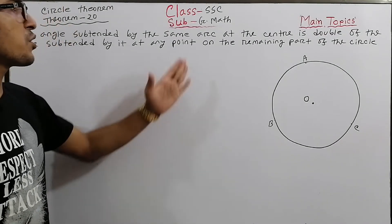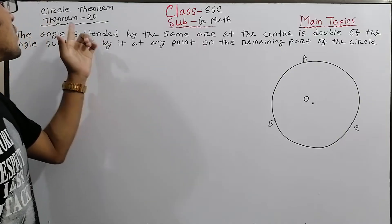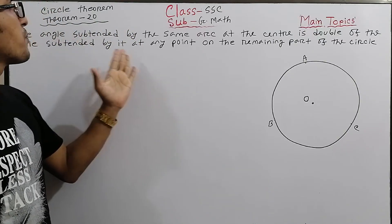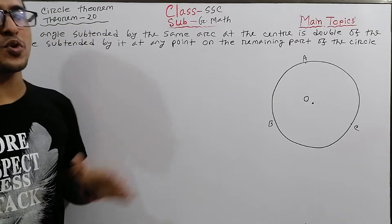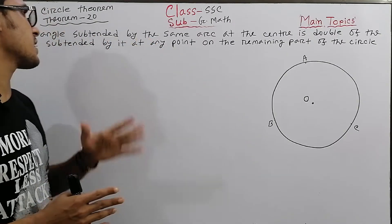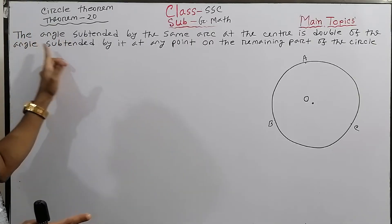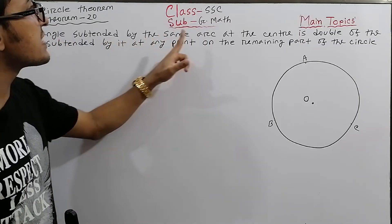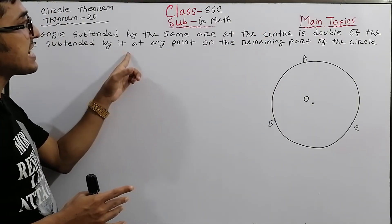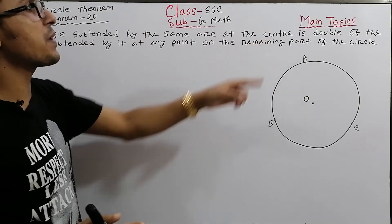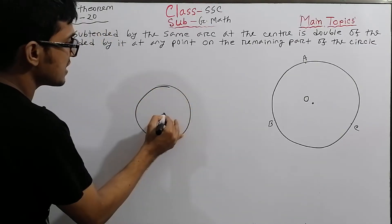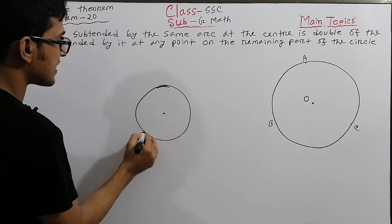Assalamualaikum, welcome dear students. Today we are discussing Theorem 20, which is about circles. This is an important theorem — the angle subtended by an arc at the center is double the angle subtended by it at any point on the remaining part of the circle.